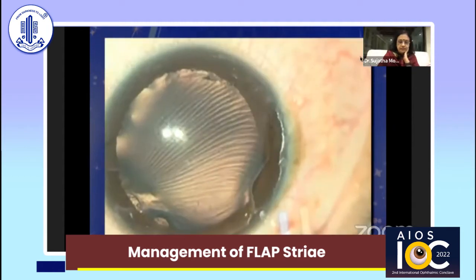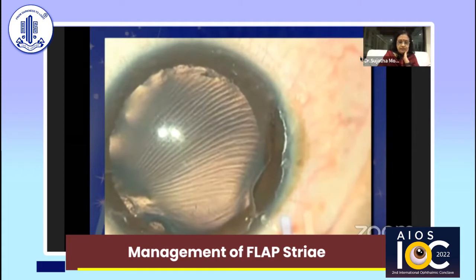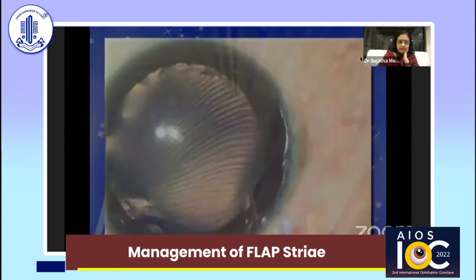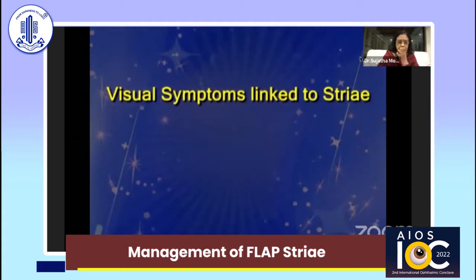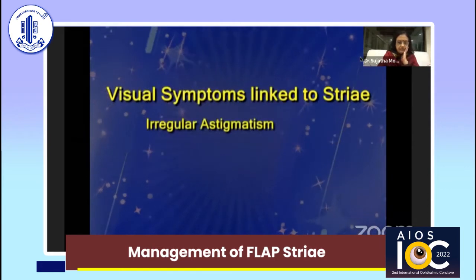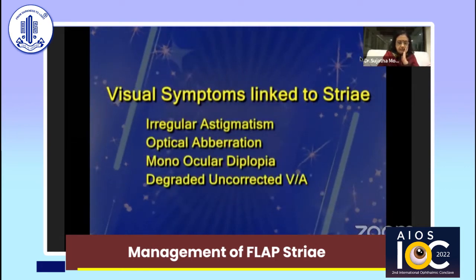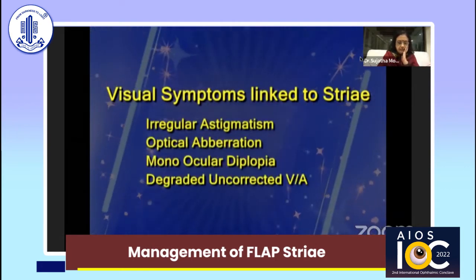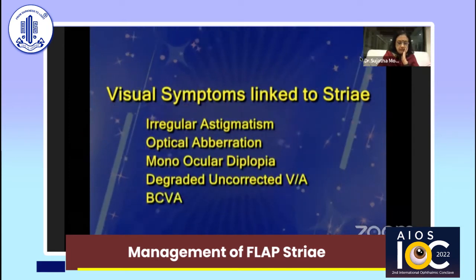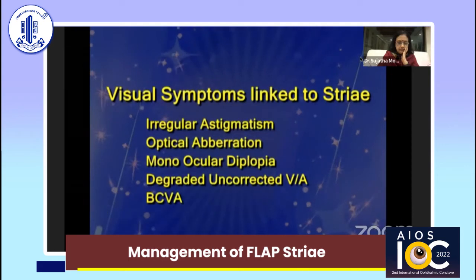Micro or macro striae not causing visual symptoms can be left alone. Flap folds causing severe visual symptoms have to be dealt with immediately. Visual symptoms linked to striae include irregular astigmatism, optical aberrations, monocular diplopia, and degraded uncorrected and best corrected visual acuity. Early intervention is recommended in these cases.